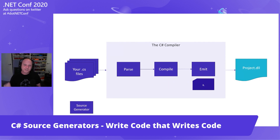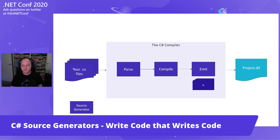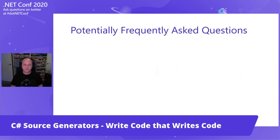With C# 9 source generators, you can hook into the compiler pipeline and run your own code, accessing the internal data structures that the compiler has — which is super powerful. At this point, usually people have some questions, and I'm going to try and guess what they are.